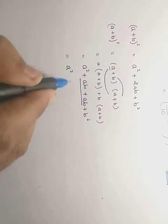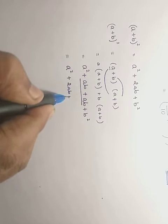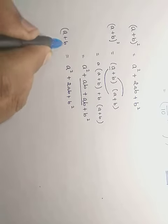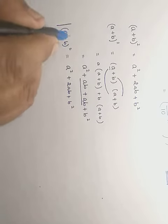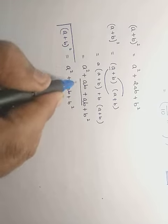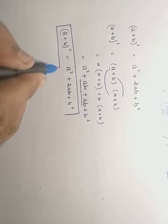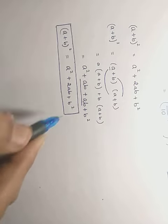That is equal to a², ab plus ab becomes 2ab, and plus b². That is how (a + b) whole square is equal to a² + 2ab + b².